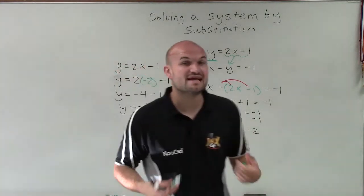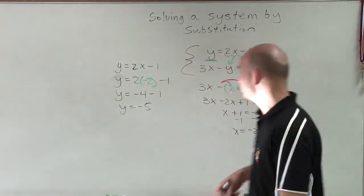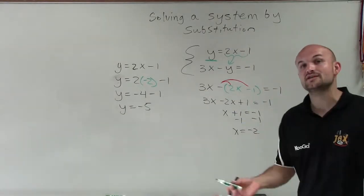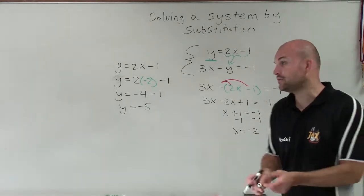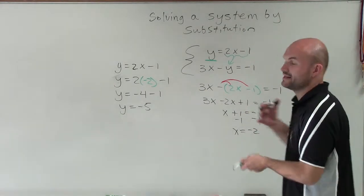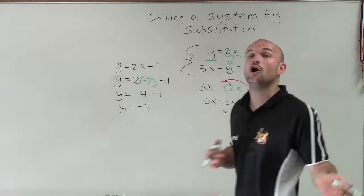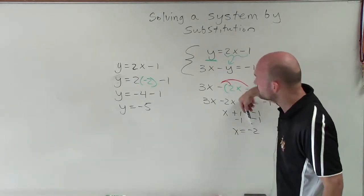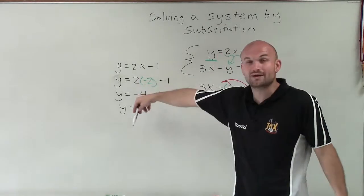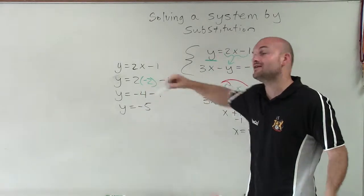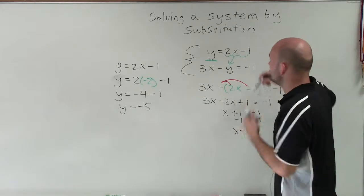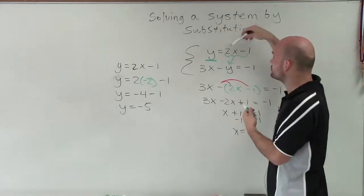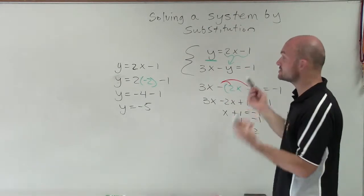So my solution is x equals negative 2 and y equals negative 5. When x equals negative 2 and y equals negative 5, those values are going to make this system true — meaning it's going to be true for both of these equations.